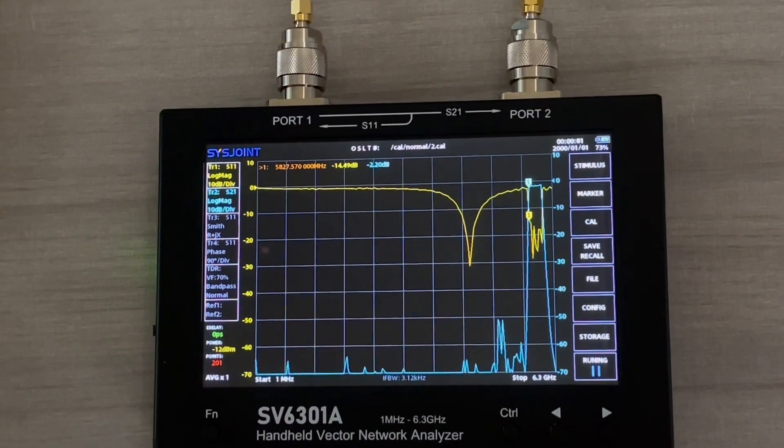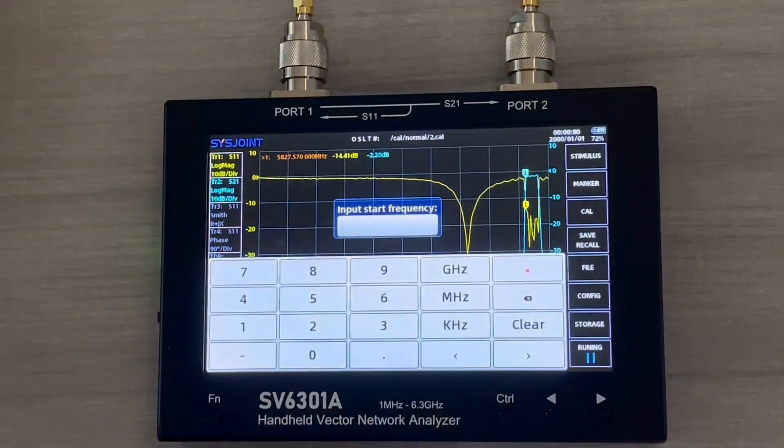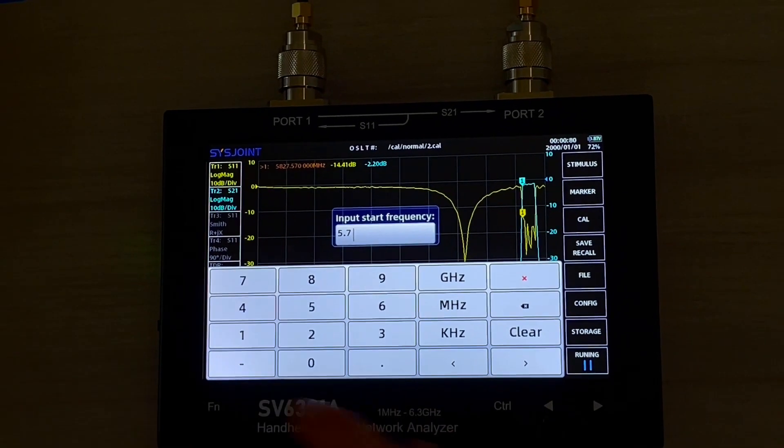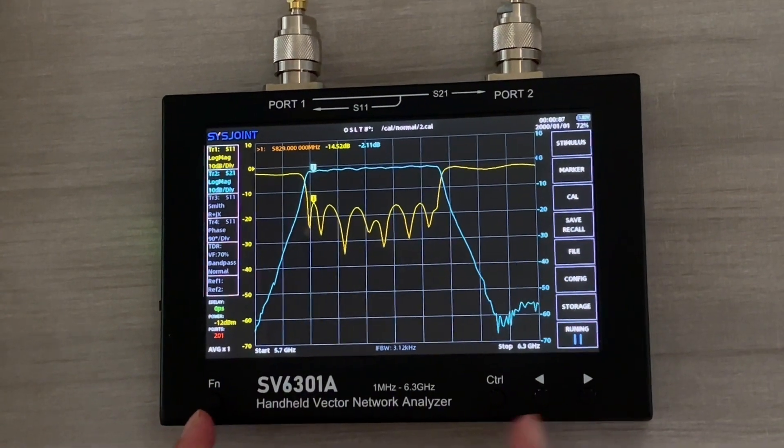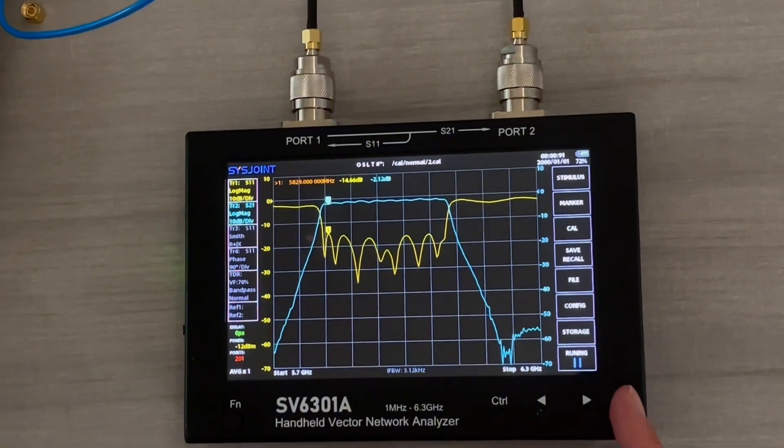The next thing we will do is change our frequency band a little bit. What we do is click the start frequency here. We go to say 5.7 gigahertz. Now we can see we change the bandwidth. We change from 5.7 gigahertz to 6.3 gigahertz.